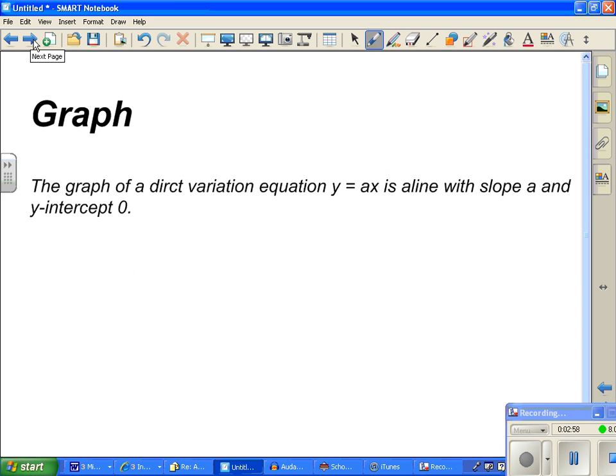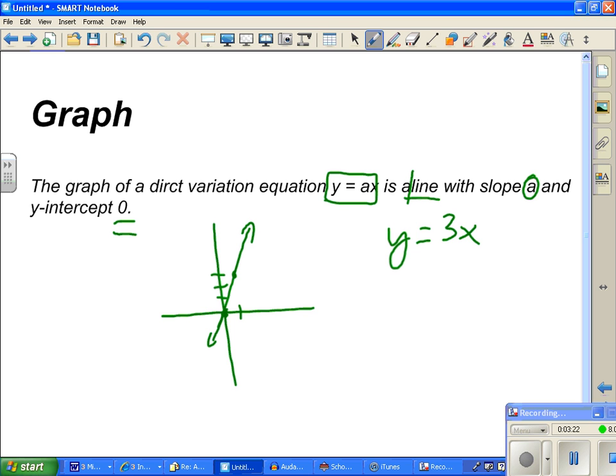The graph. And we talked about this. y equals ax is a line with slope a. And we talked about that. And a y-intercept of 0. So if your direct variation said y equals 3x, well, we're obviously going to start at (0, 0). Slope is 3, up 3 over 1. Bingo. Direct variation. Pretty simple idea.